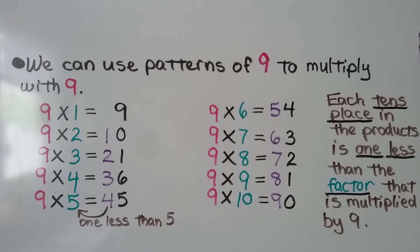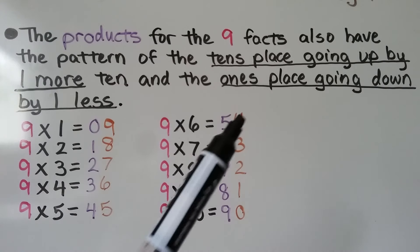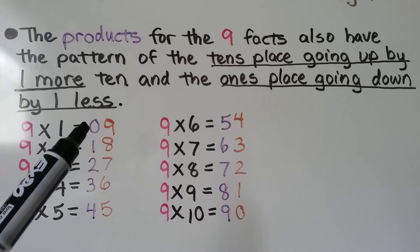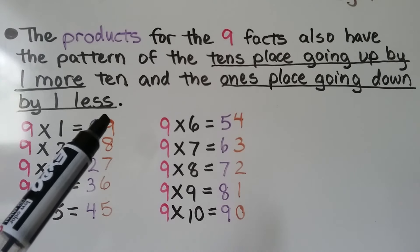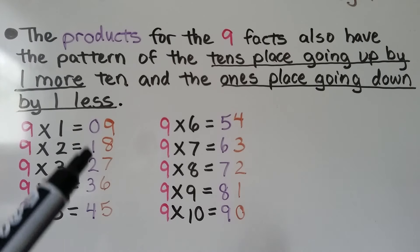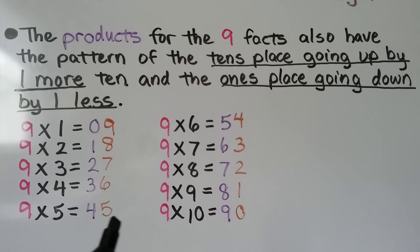The products for 9 facts also show the pattern of the tens place going up by 1 and the ones place going down by 1. The tens place starts at 0 and goes 0, 1, 2, 3, 4, 5, 6, 7, 8, 9. The ones place goes down: 9, 8, 7, 6, 5, 4, 3, 2, 1, 0.